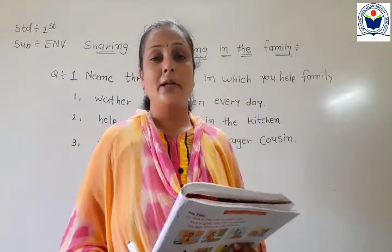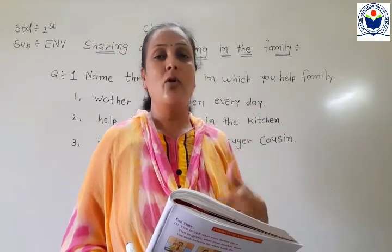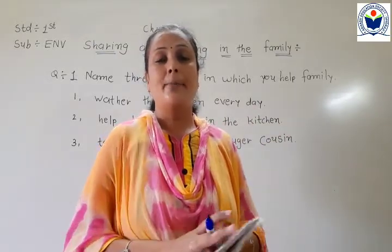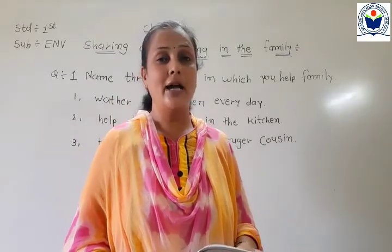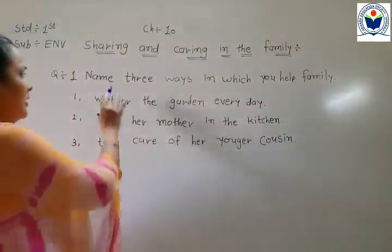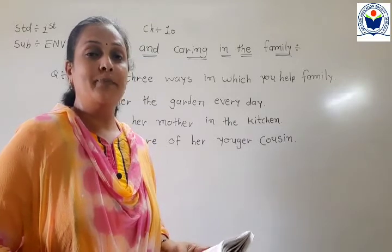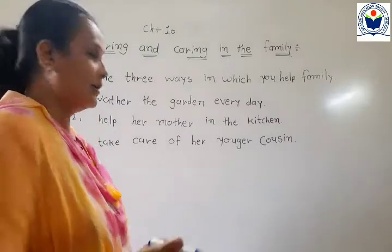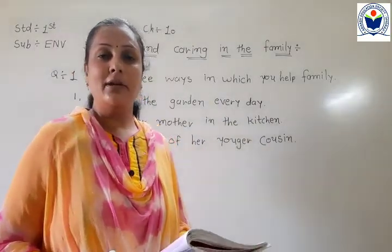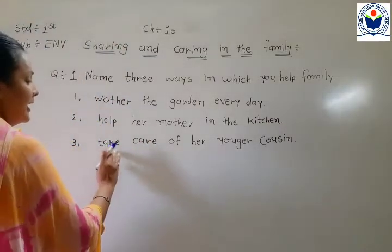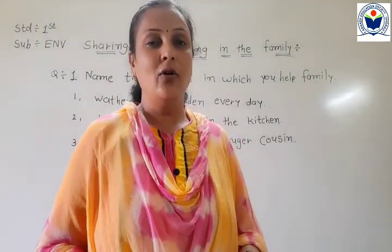So 3 ways — इसका मतलब यहाँ पे हमें 3 करनी के लिए बोला है, but आप 5 भी कर सकते हो, इससे ज्यादा भी कर सकते हो — but यहाँ पे 1, 2 and 3 help जो आप अपने family members को help करते हो, यहाँ पे write करनी है. So Number 1: water the garden every day — आप garden में हरोज पानी देते हो. Second: help mother in the kitchen — kitchen में आप Mummy की help करते हो. And next: take care of your younger cousin — आपकी younger cousin है, उसकी take care करते हो.